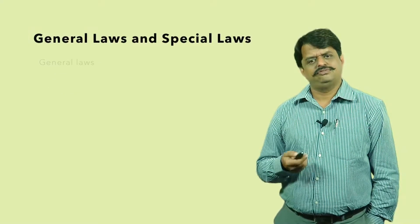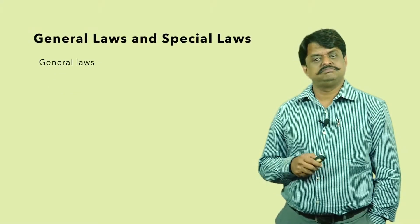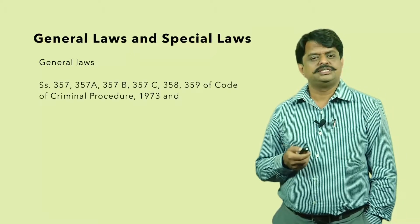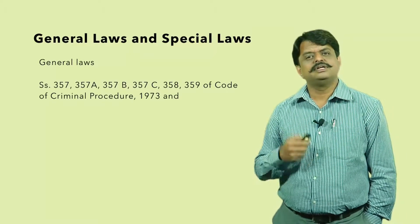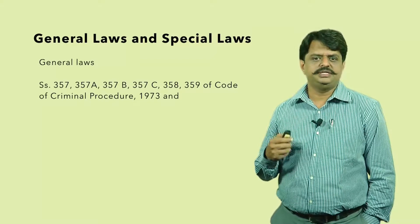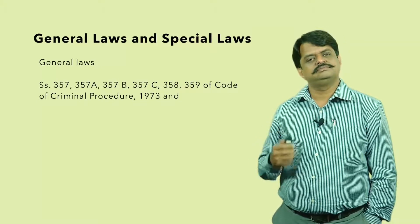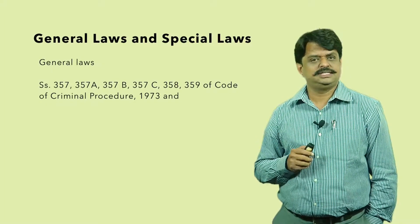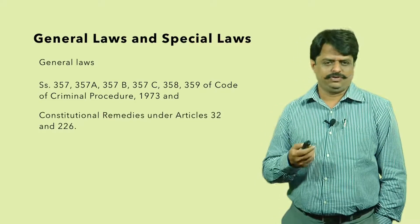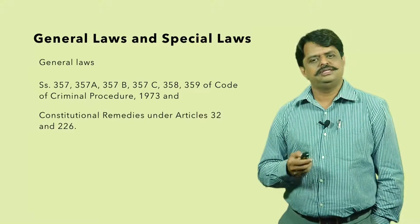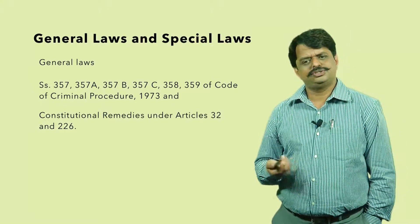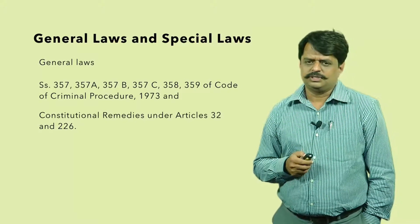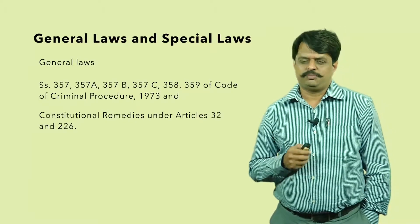Under general law, we have the Criminal Procedure Code — that is, Section 357, which was later amended to include sections 357A, 357B, 357C, 358, and 359. The Constitution of India, if considered as one of the general laws, provides Articles 32 and 226, which provide for victim compensation.